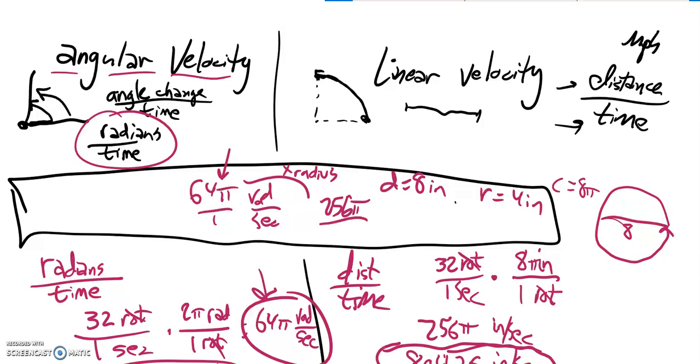That's the distance it's gone through in one second. And notice that's the same answer. So angular velocity times the radius gives me linear velocity. Linear velocity divided by the radius gives me angular velocity.